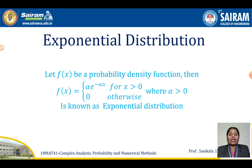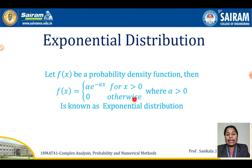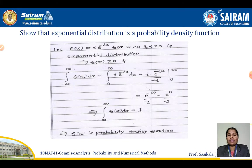The exponential distribution is defined as: let f(x) be a probability density function, then f(x) equals alpha times e to the power of minus alpha x, for x greater than 0, and 0 otherwise. The function exists only for positive x; for negative x there is no function. Alpha must be greater than 0.